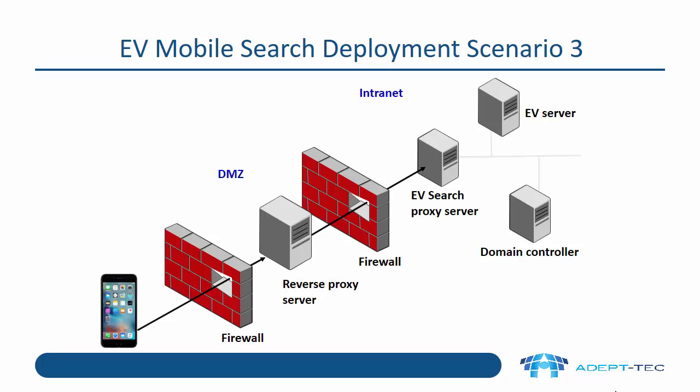Instead, to allow access to the EV Search proxy server, it's recommended that you publish it via a reverse proxy server, such as Microsoft Threat Management Gateway, in a DMZ network. In this way, the mobile search client will access the EV Search proxy server and then transparently be passed through to the EV server.